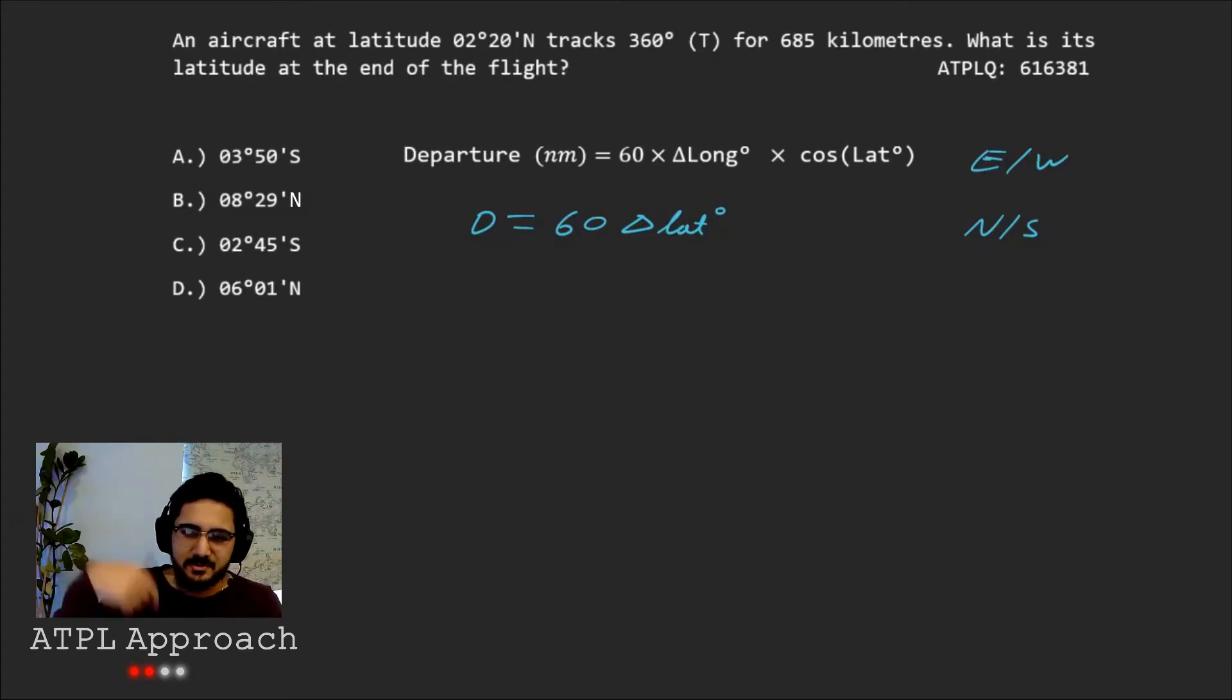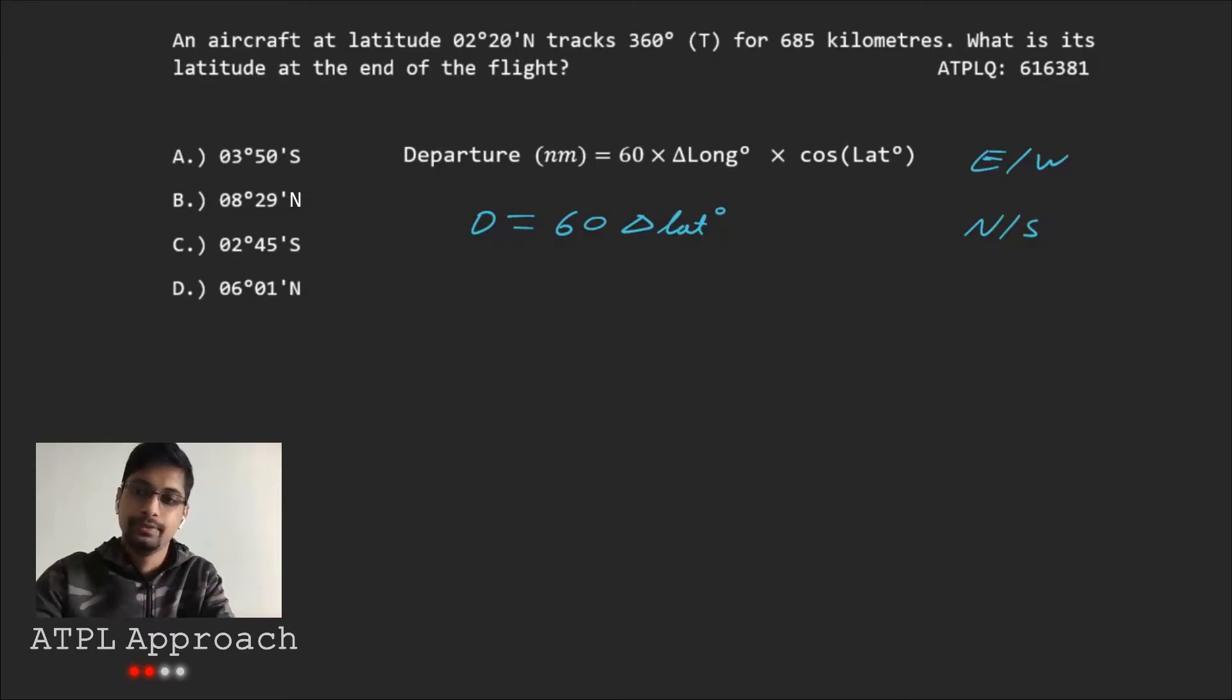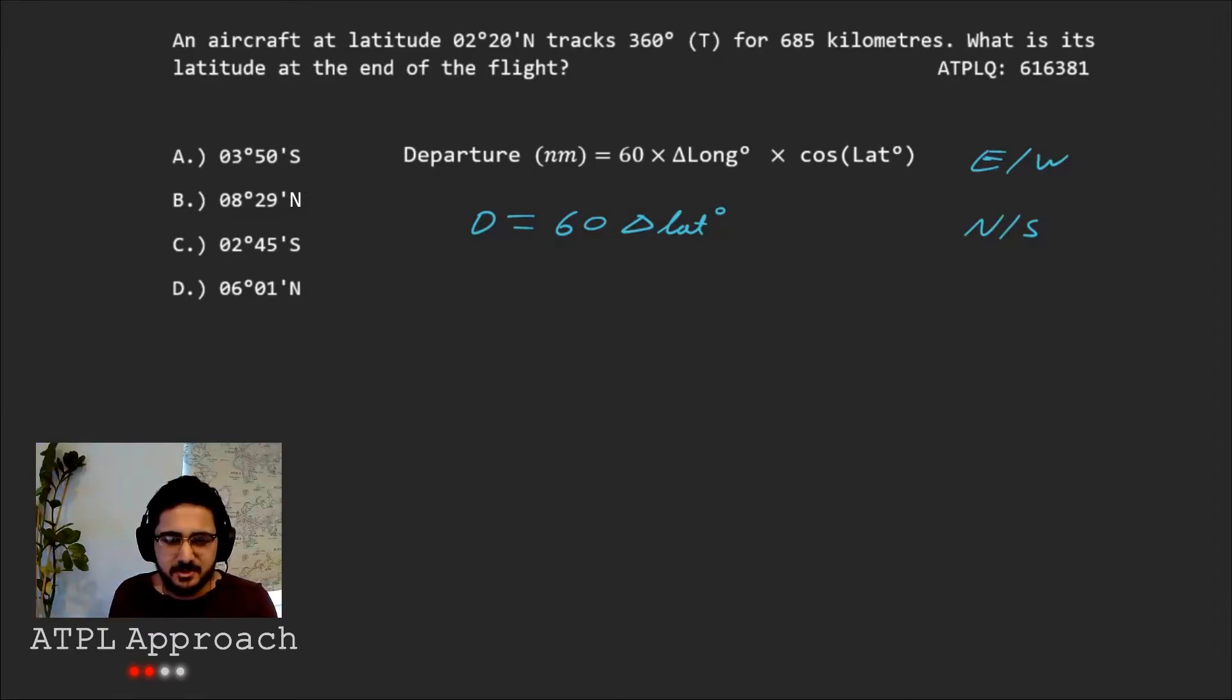So it's only directly north or directly south. If we start going east or west a bit, then we need to... We'll get a triangle and then we'll need to think about the north-south component and the east-west component, if that makes sense. So we'd have to think of both of them. But as we're just going north or south completely, we'll just use that one. So how would you go about using that equation?